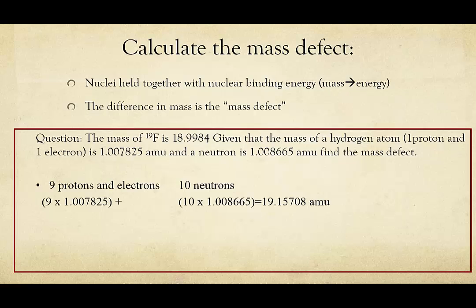From here, if we want to know our mass defect, we know our difference in mass, because we know the mass that was given, we know the mass that we would expect, and we subtract. And we get a difference in mass of 0.1587 amu.